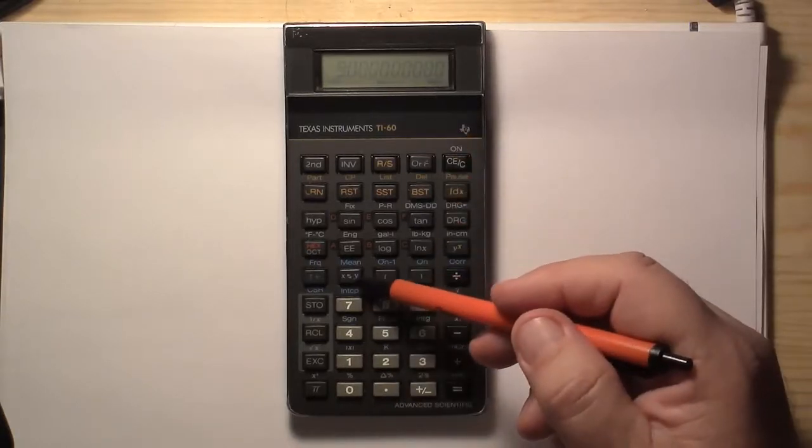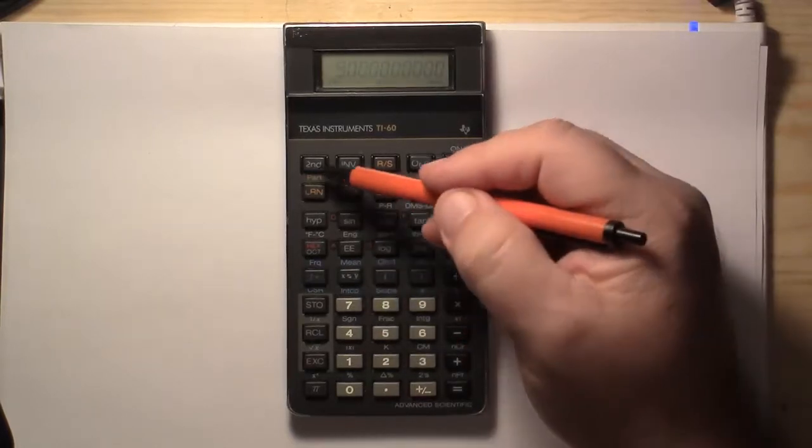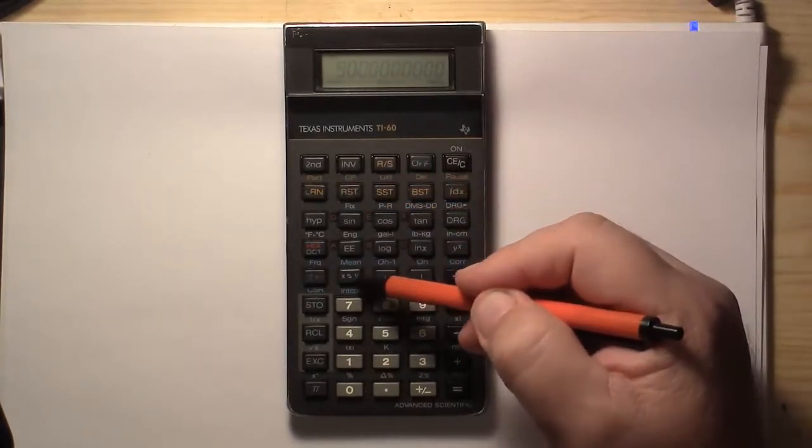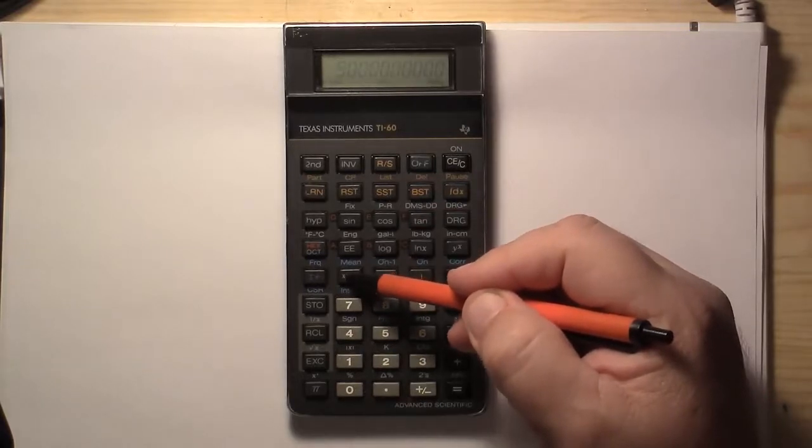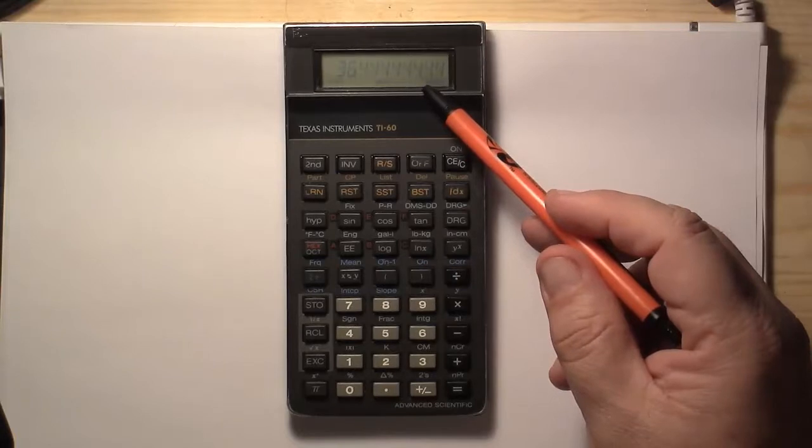Now to find the mean, you see how the mean is in blue above this button. So we're going to do our second button. And then we'll push this XY button. And it gives us 36.44 if we round it two decimal places.